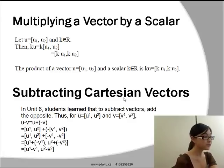Subtracting Cartesian vectors. In Unit 6, students learned that to subtract vectors, add the opposite. Thus, for u=[u¹,u²] and v=[v¹,v²], u-v=u+(-v) = [u¹,u²]+[(-v¹),(-v²)] = [u¹+(-v¹), u²+(-v²)] = [u¹-v¹, u²-v²].